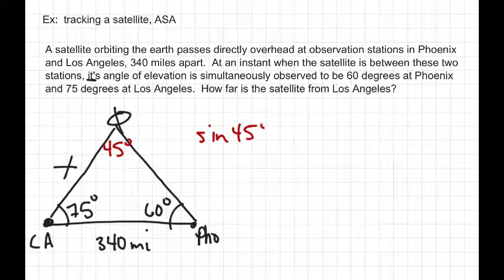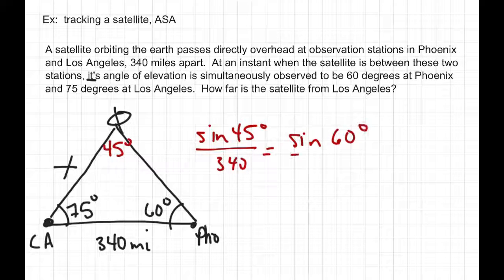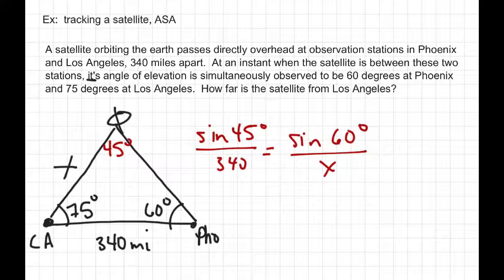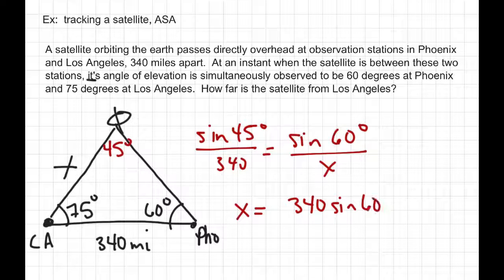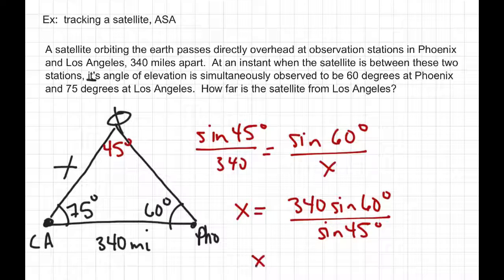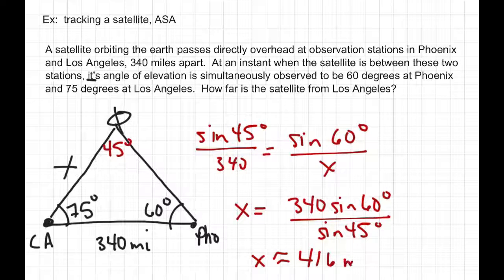So the sine of 45 degrees over 340 is equal to the sine of 60 degrees over x, because we want to know what x is. With the Law of Sines we just cross-multiply. When you cross-multiply and solve for x, you get 340 times the sine of 60 degrees divided by the sine of 45 degrees. We find out that the length from the satellite to Los Angeles is approximately 416 miles.